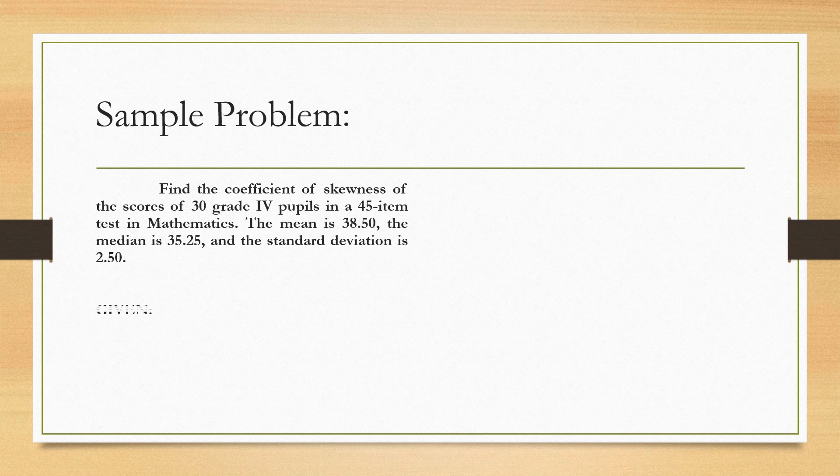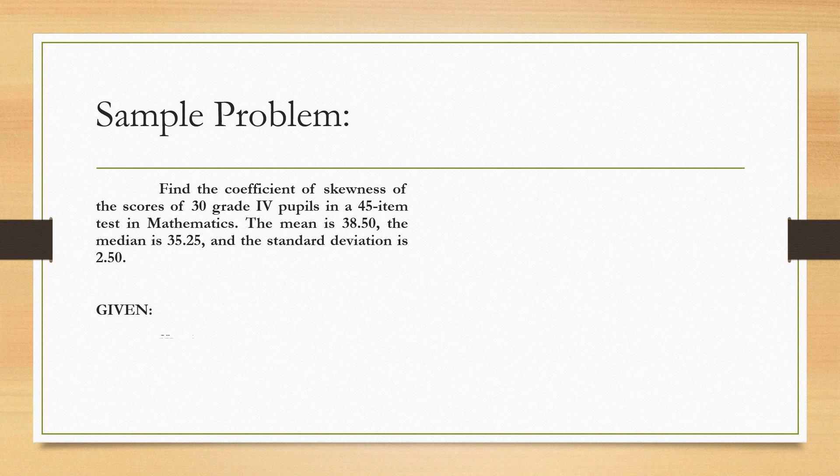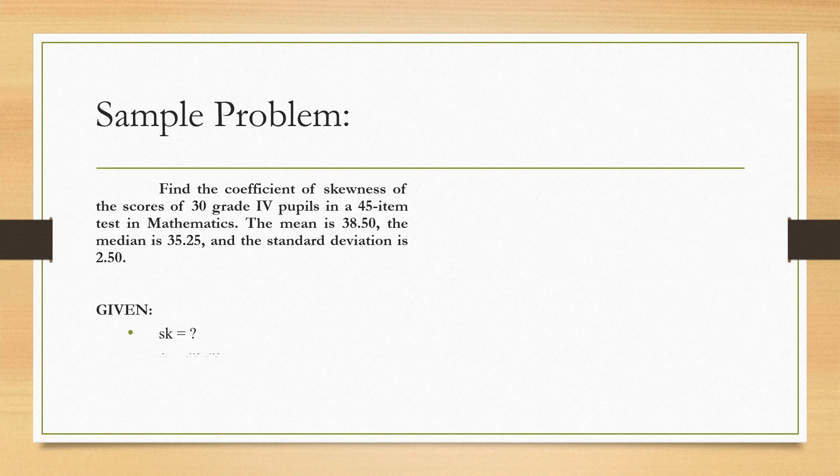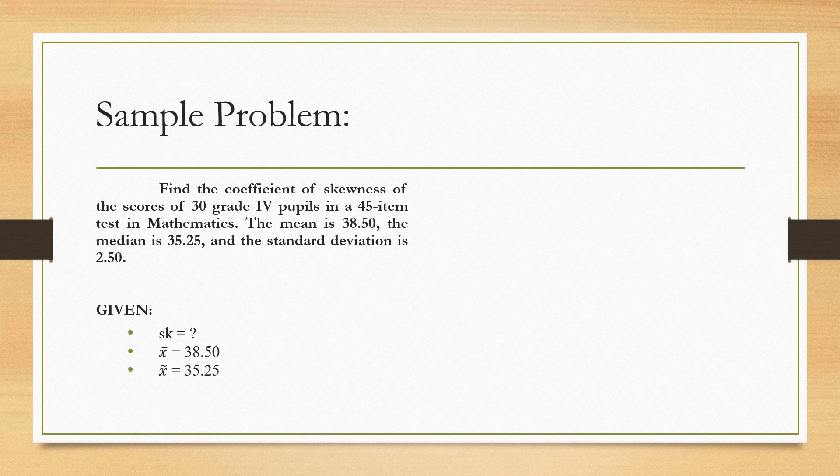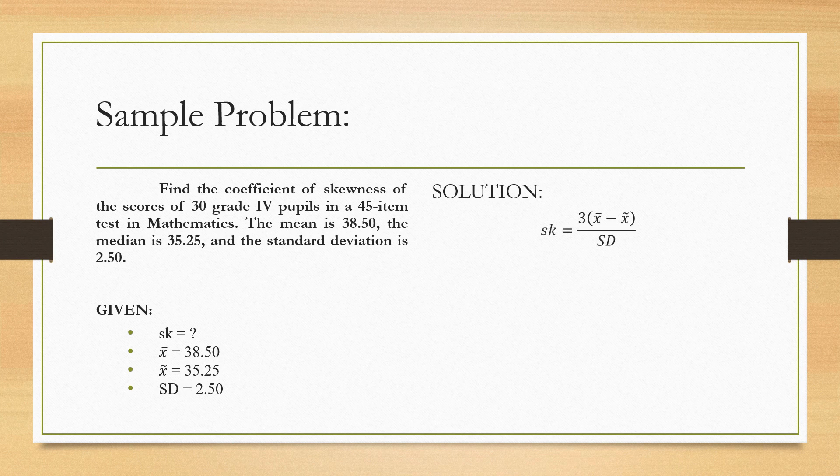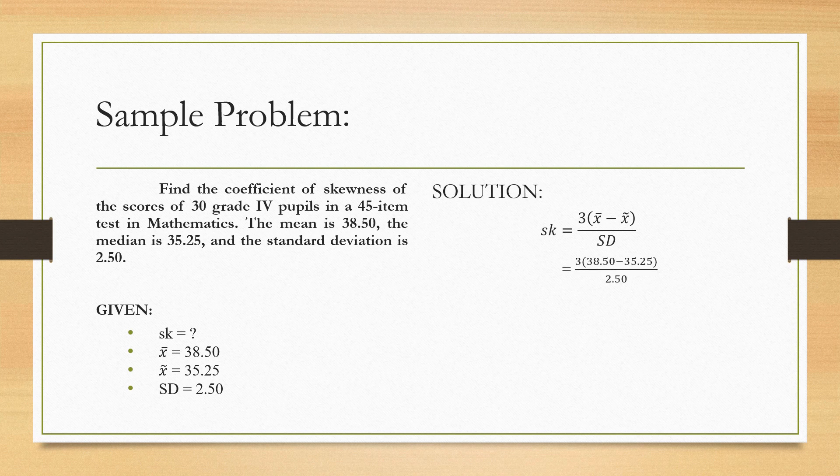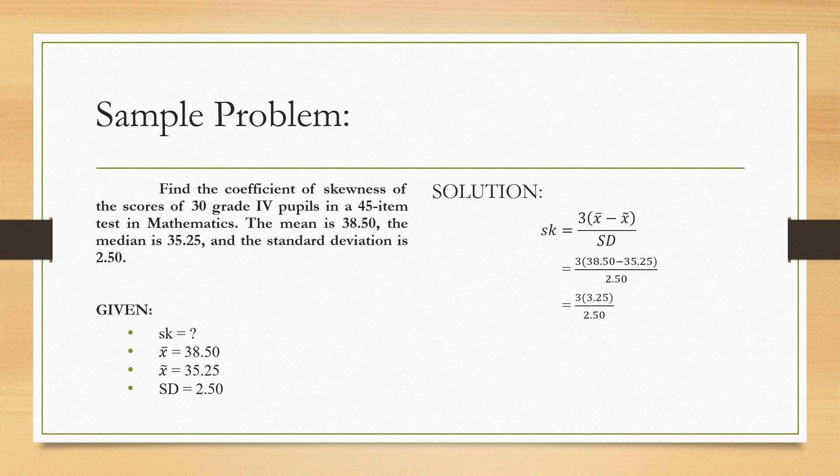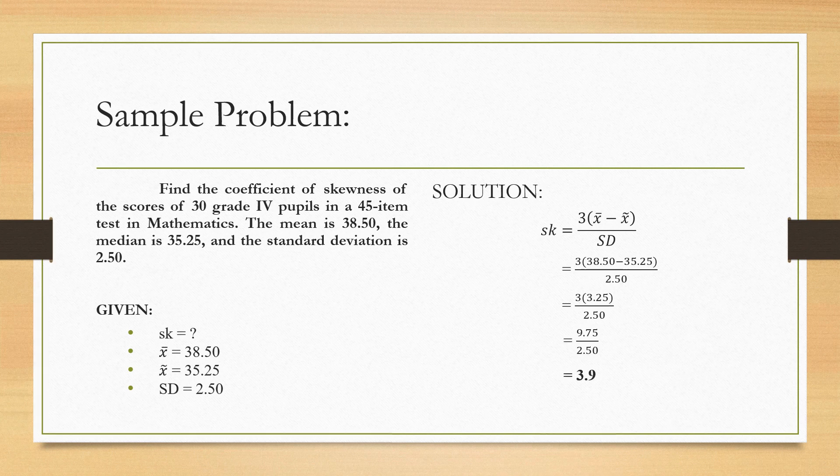We have here a sample problem. Find the coefficient of skewness of the scores of 30 grade 4 pupils in a 45 item test in mathematics. The mean is 38.50, the median is 35.25, and the standard deviation is 2.50. So the given is the mean which is 38.50, the median is 35.25, the SD is 2.50. And now, we are to solve for the skewness. So the solution is, formula skewness equals 3 times the quantity mean minus the median all over the standard deviation. By substitution, we have 3 times 38.50 minus 35.25 all over 2.50. Hence, the answer is 3.9.